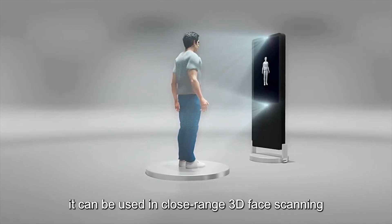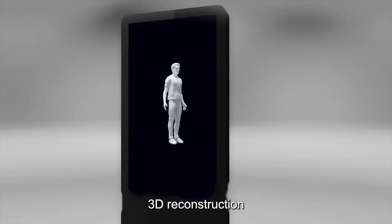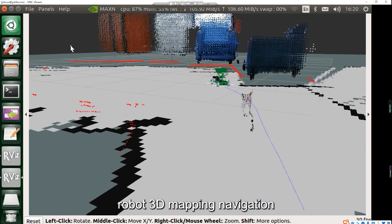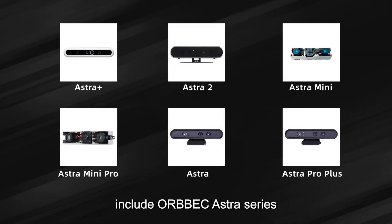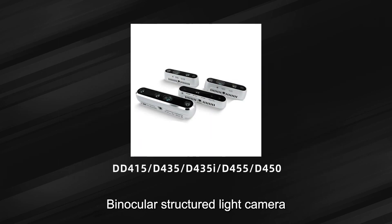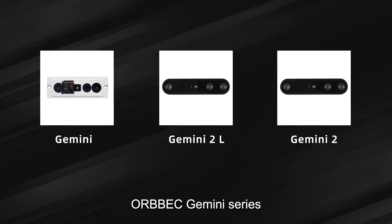Short-range measurement accuracy can reach millimeter-level accuracy. Therefore, it can be used in close-range 3D face scanning, 3D reconstruction, robot 3D mapping navigation, etc. Monocular structured light cameras include Orbbec Astra series. Binocular structured light cameras include Intel RealSense series and Orbbec Gemini series.